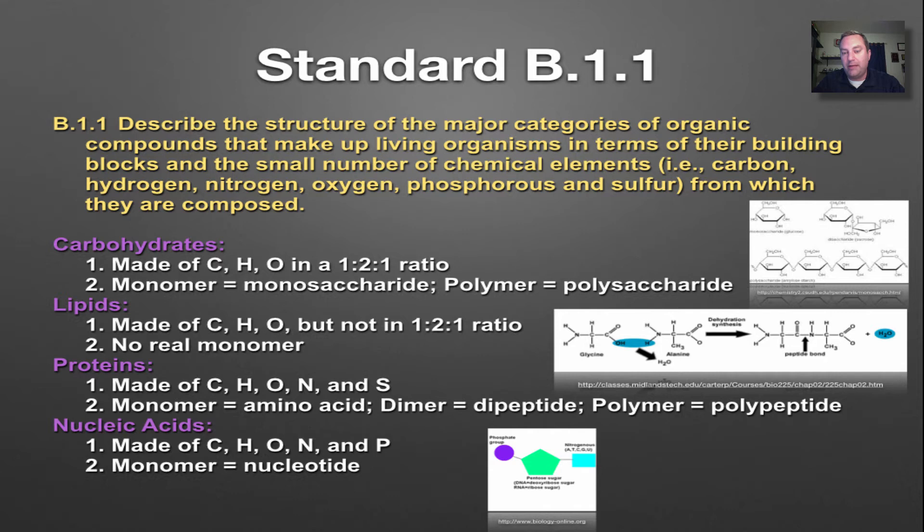Standard B1.1 deals with what is the structure of these four different biomolecules. Carbohydrates are made up of C, H, and O in a one-to-two-to-one ratio. They're made out of a single part called a monomer. In the case of a carbohydrate, the monomer is called a monosaccharide, and that word means single sugar.